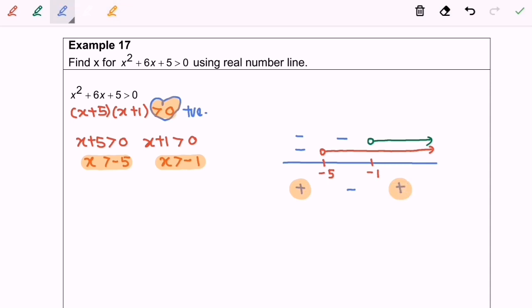Finally, we have to illustrate the answer. Negative infinity until negative 5, where negative 5 is not included, union negative 1 until infinity, where negative 1 is not included. In an inequalities or interval form.